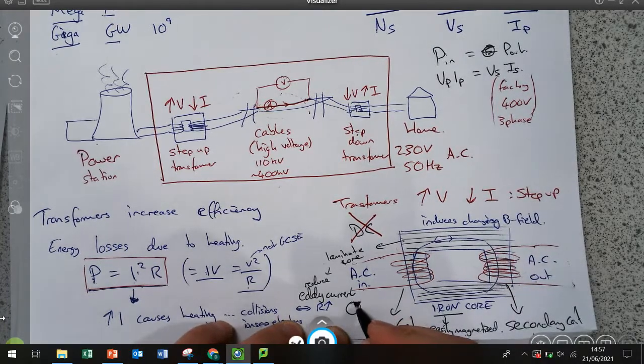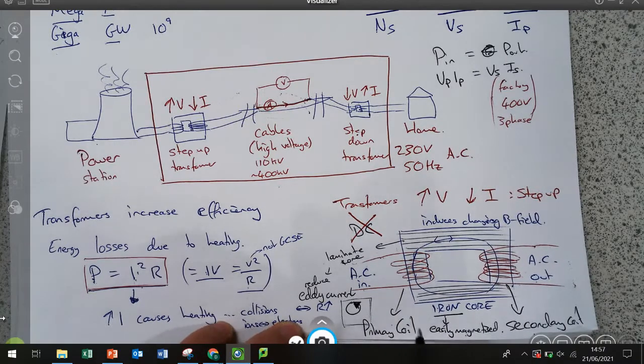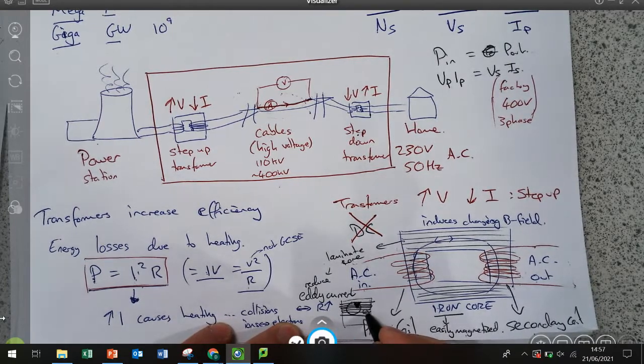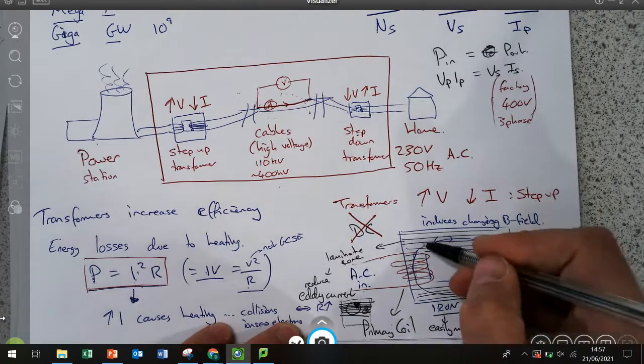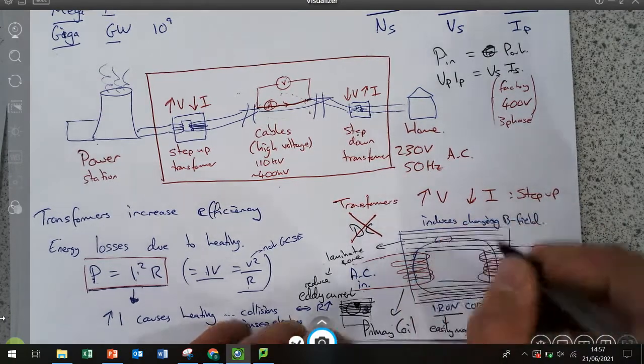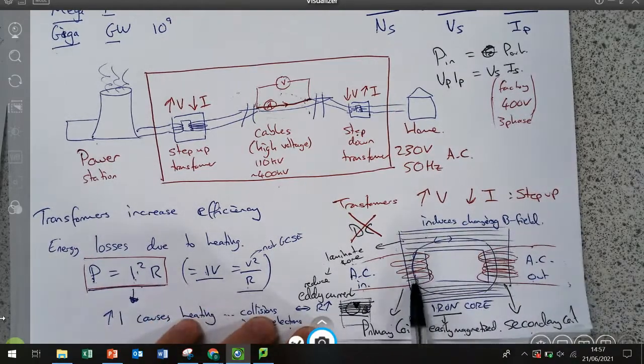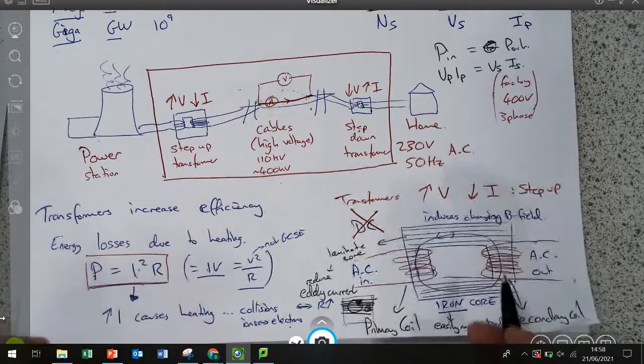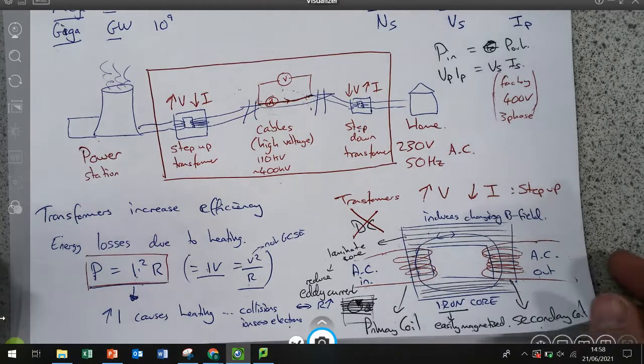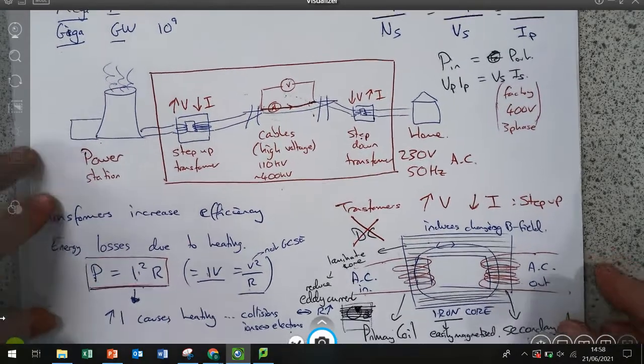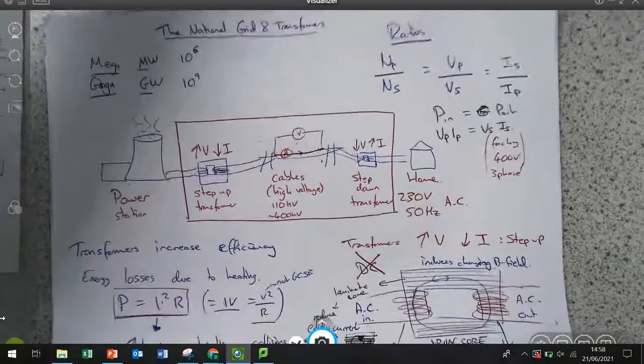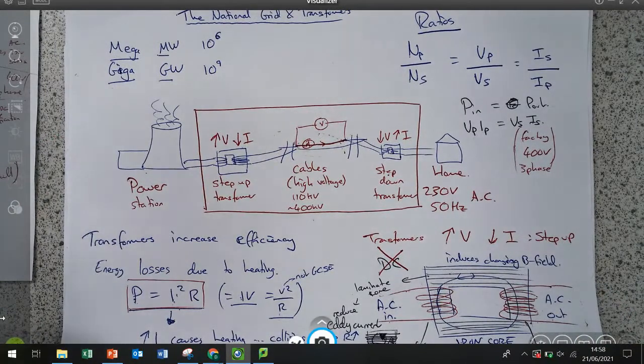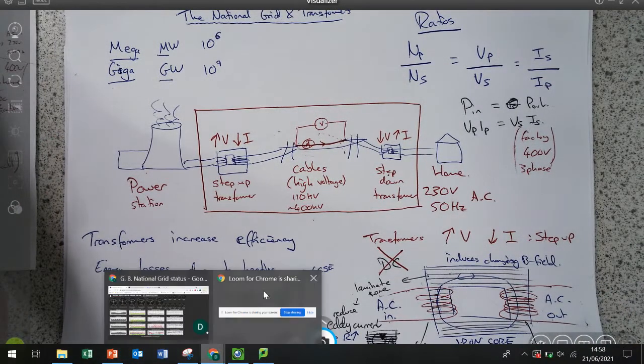Now, these eddy currents try to form in the metal. But if we laminate the core and make it really thin layers, these eddy currents are tiny because they cannot move past this coating into the next layer of iron. The magnetic field can pass through, but the current can't because we're making the lamination out of a non-conductor. And that is pretty much it. So here is a nice summary of it all. Thank you.